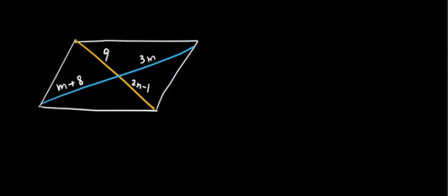Alright, let us continue one more property. If it is a parallelogram, then the diagonals bisect each other.